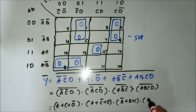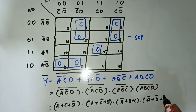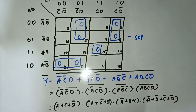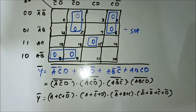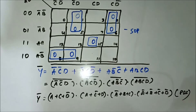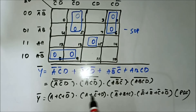And for the last term: A-bar or B-bar or C-bar or D-bar. So this is the complete simplified POS expression for question 8.